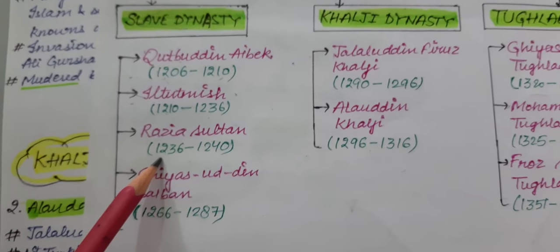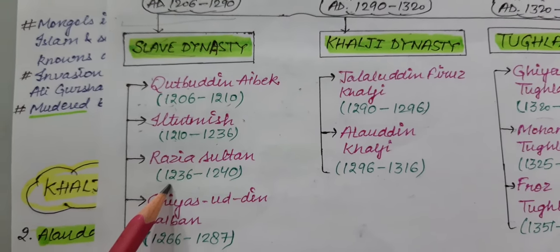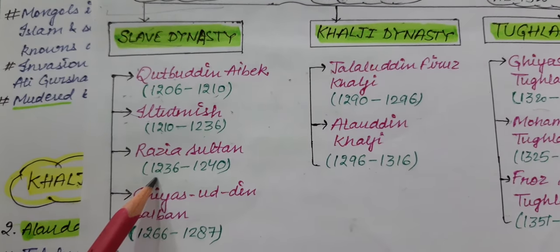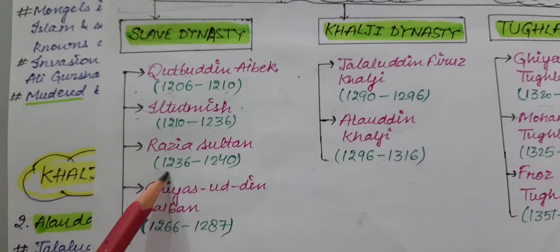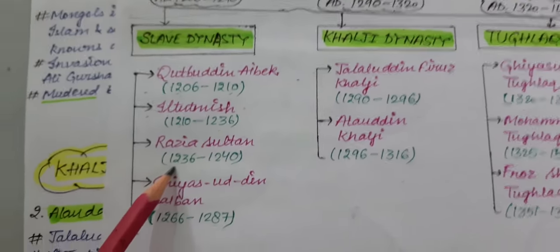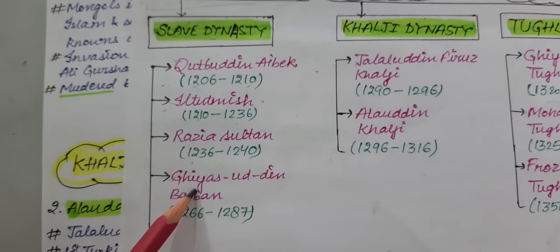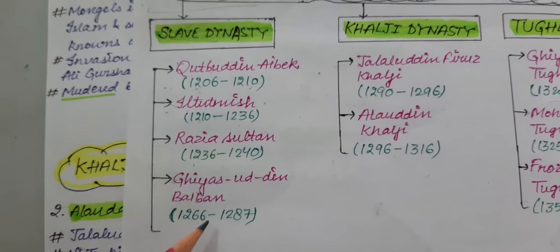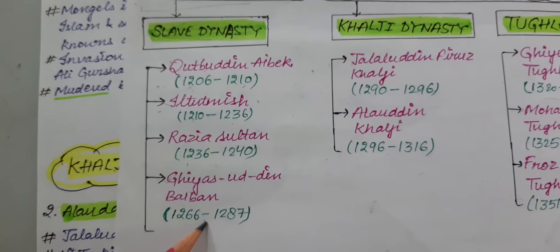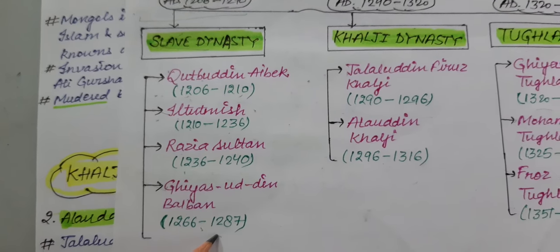Next was his daughter Razia Sultan, who became the Sultan of Delhi from 1236 AD to 1240 AD. She was the only woman who sat on the throne of Delhi in the whole medieval history. Next was Ghiyasuddin Balban, who sat on the throne of Delhi from 1266 AD to 1287 AD.